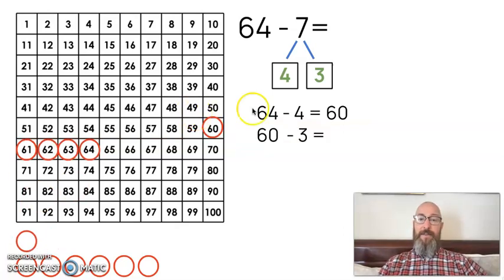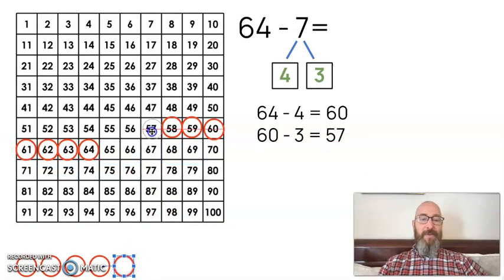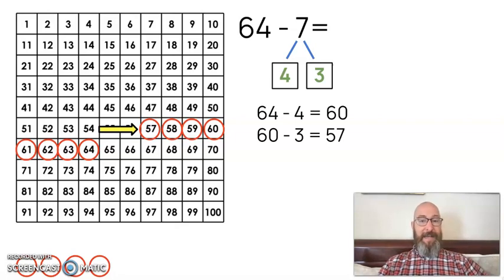Next we're going to subtract the 3. We've already subtracted the 4, now it's time to do the 3. 60 minus 3 we know is going to be 57. Let's prove it: 1, 2, 3. So we know that 60 minus 3 is 57. I've taken away the 4, we've taken away the 3, we've landed on 57, which means 57 is the answer. It is the difference in this subtraction question.